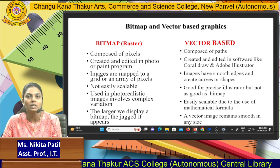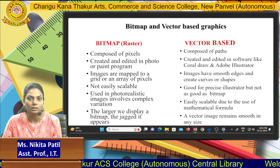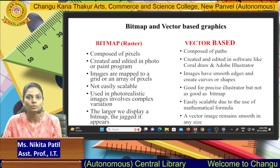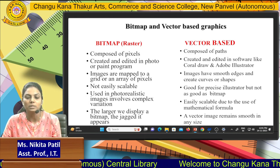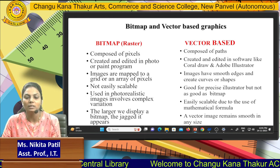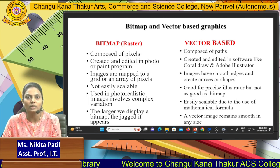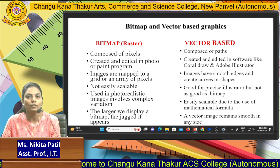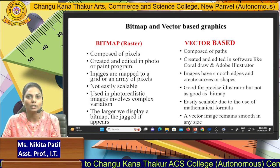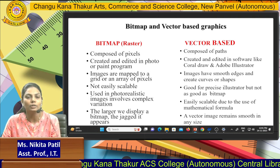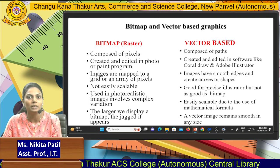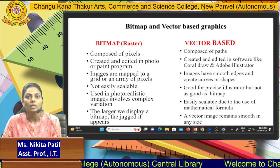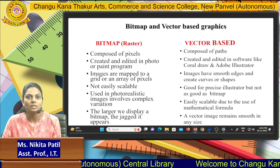Bitmap images are created and edited in photo or plain-text programs. Vector-based images are created and edited in software like CorelDRAW and Adobe Illustrator. For vector-based graphics you use geometrical paths, while for bitmap you work with coordinate and pixel axes.